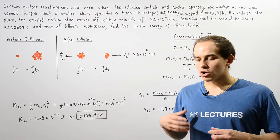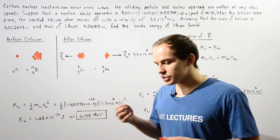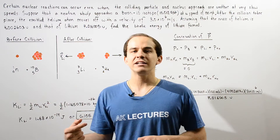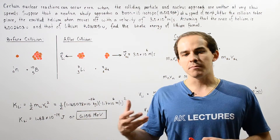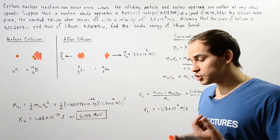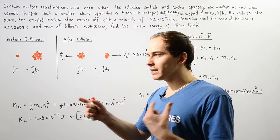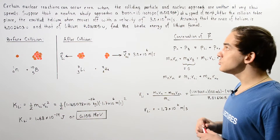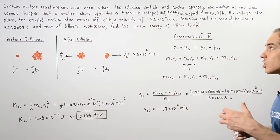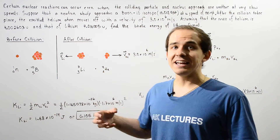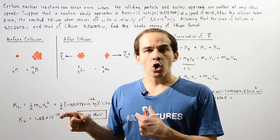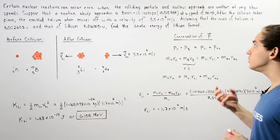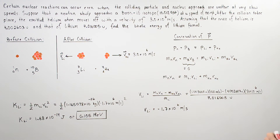Nuclear reactions are those reactions in which a particle basically collides with the nucleus of some atom, or in which two nuclei collide with one another. Nuclear reactions can occur even when the colliding particle approaches the nucleus at a very low velocity.